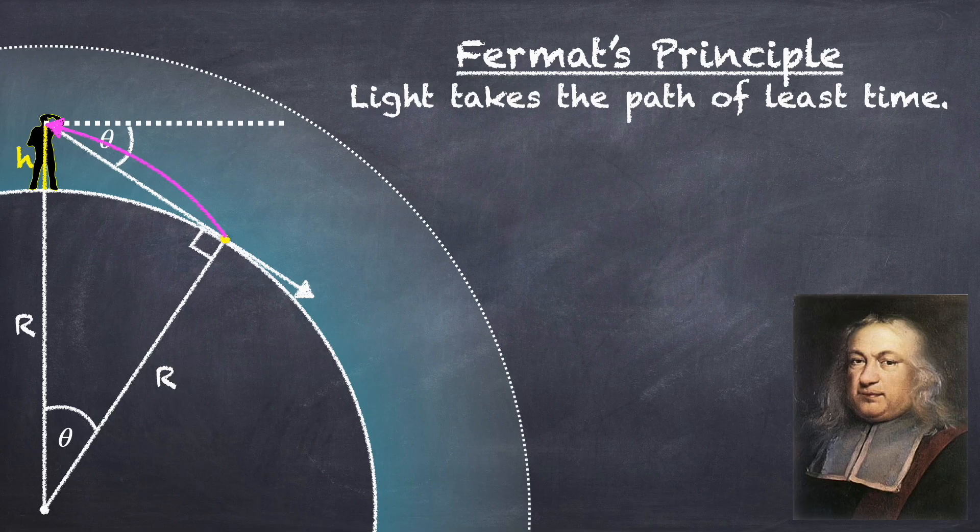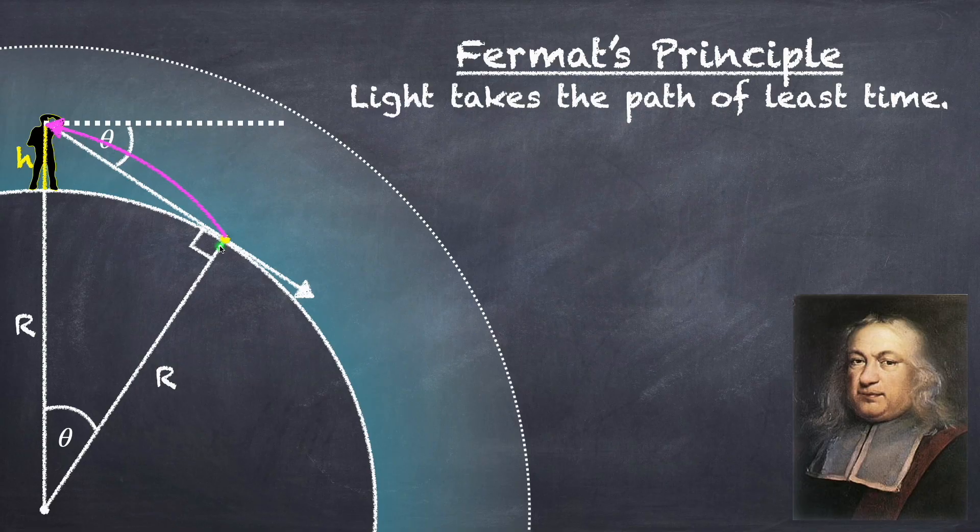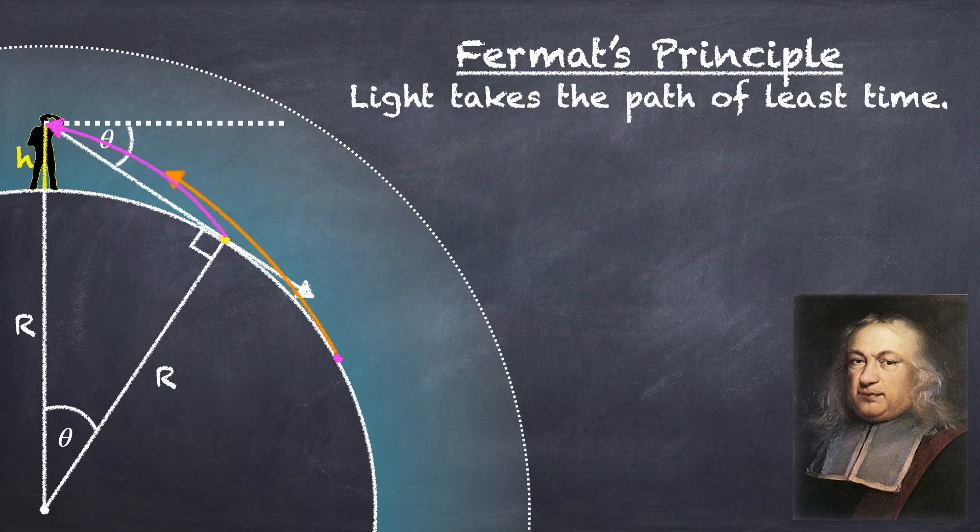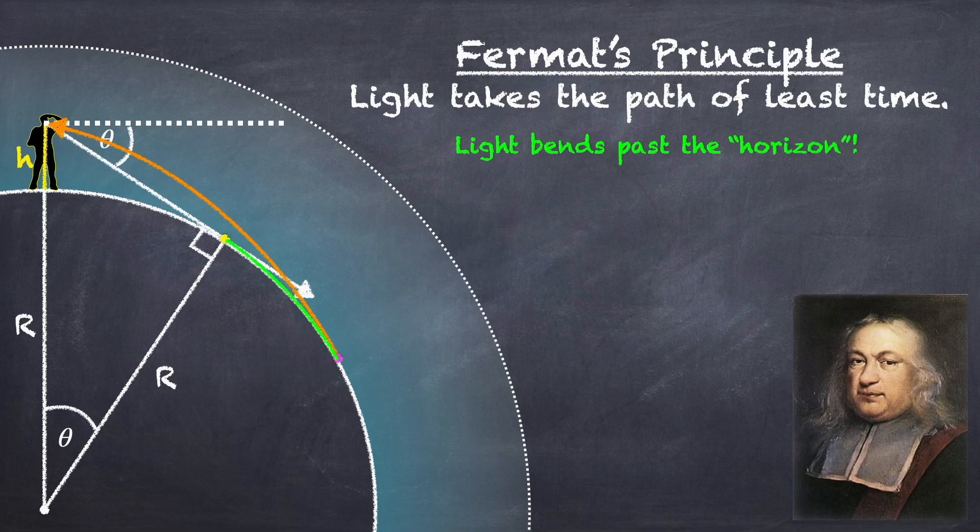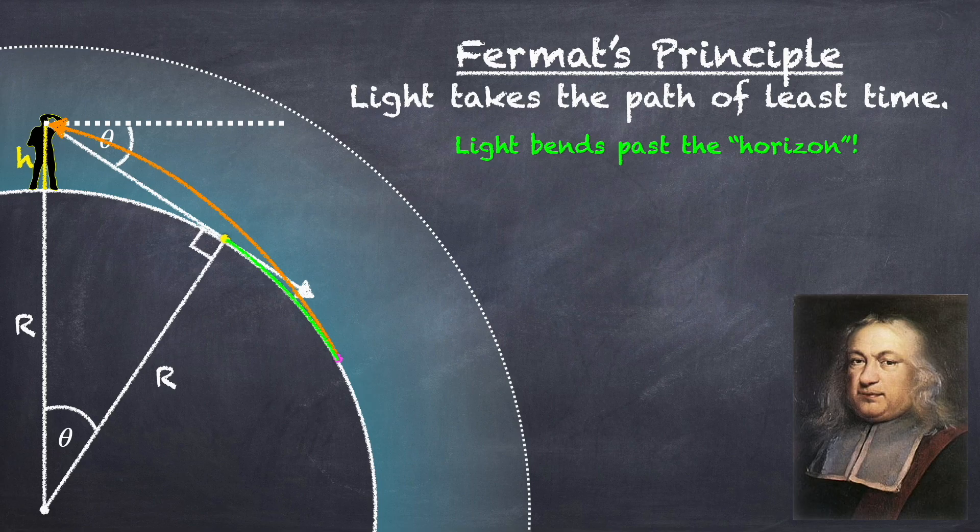And notice that this implies that the point that we labeled as the horizon is no longer the horizon because light is not traveling tangentially to the surface of the earth at this point. Instead, the actual horizon will be further along the earth's surface. Light will bend past the horizon, or I should say bend around the surface of the earth, an extra distance that we haven't accounted for, which I've drawn in green.